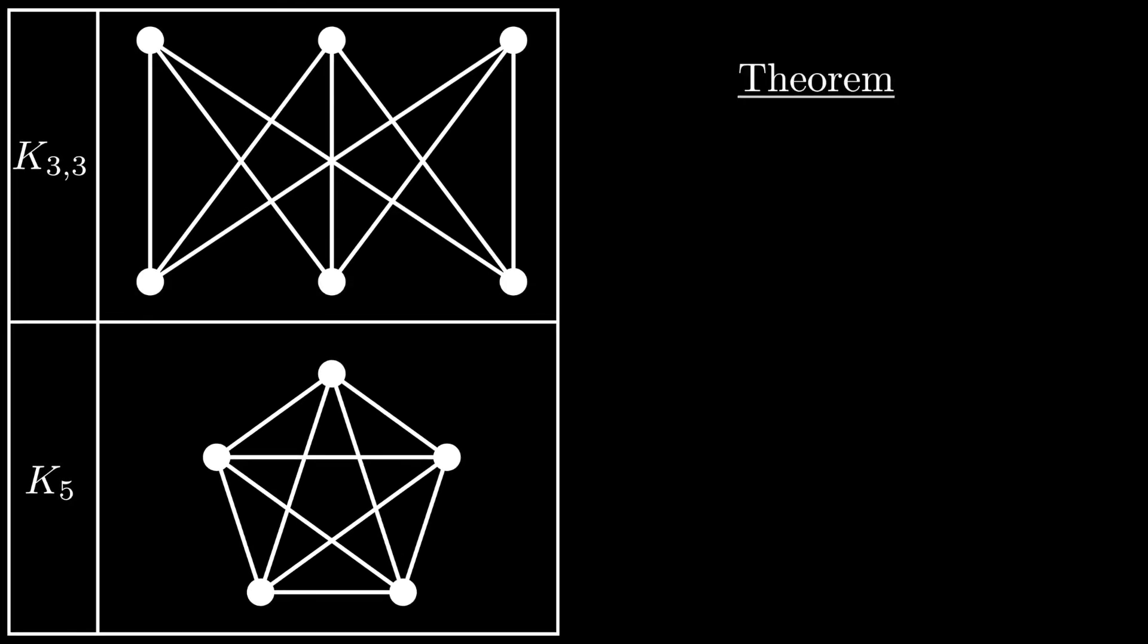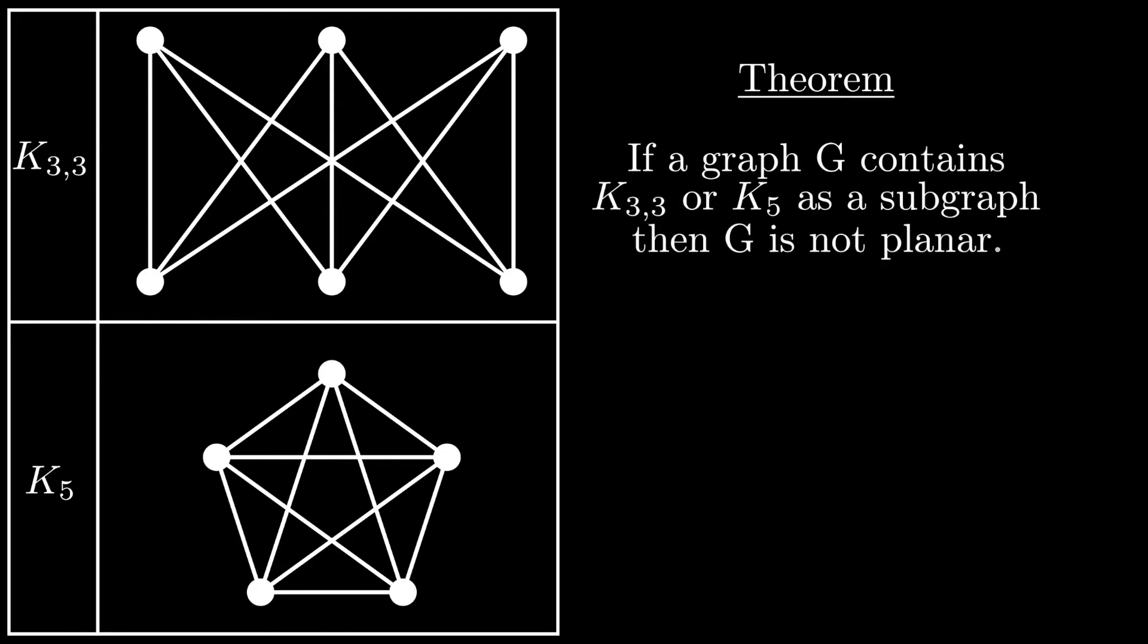There's a theorem which states that if a graph contains K33 or K5 as a subgraph, then that graph is not planar. If you understand this theorem, then you understand the basics of what it means to be a planar graph.